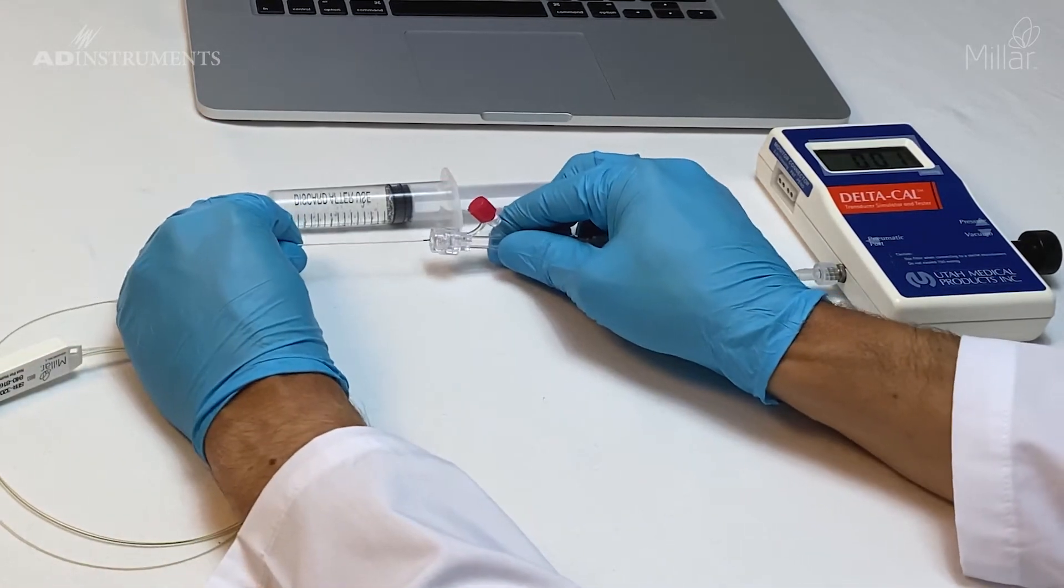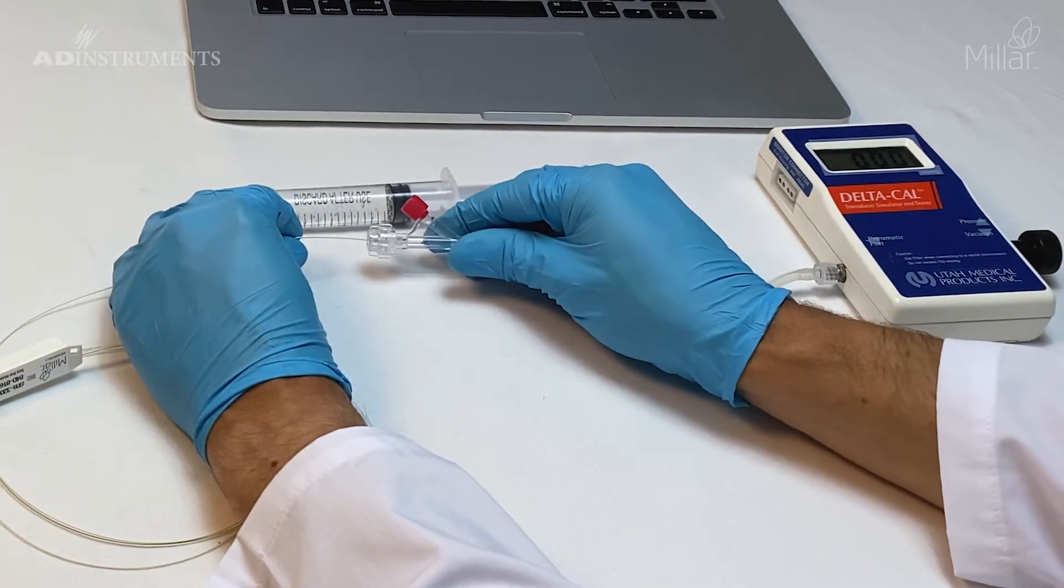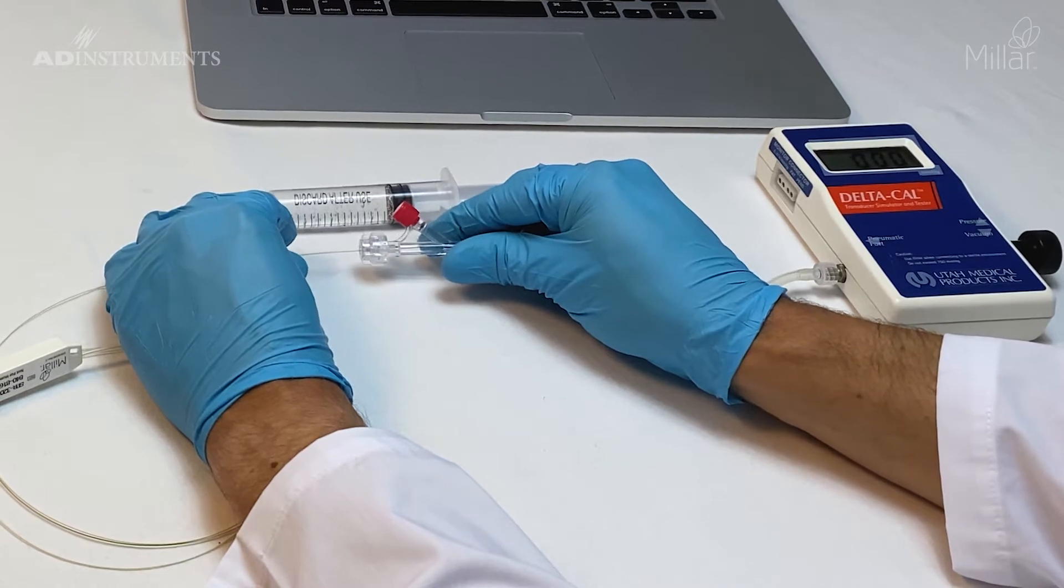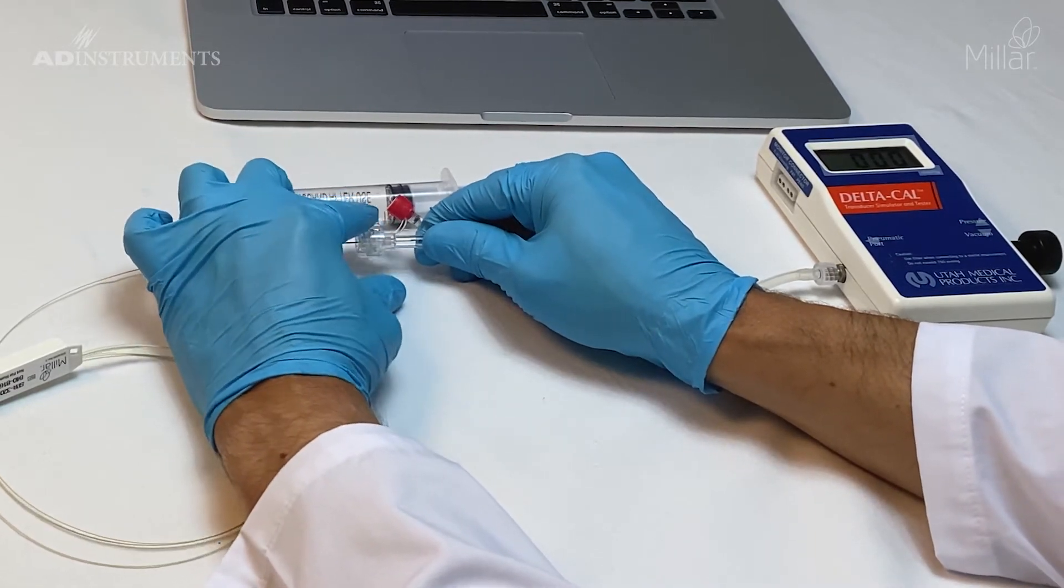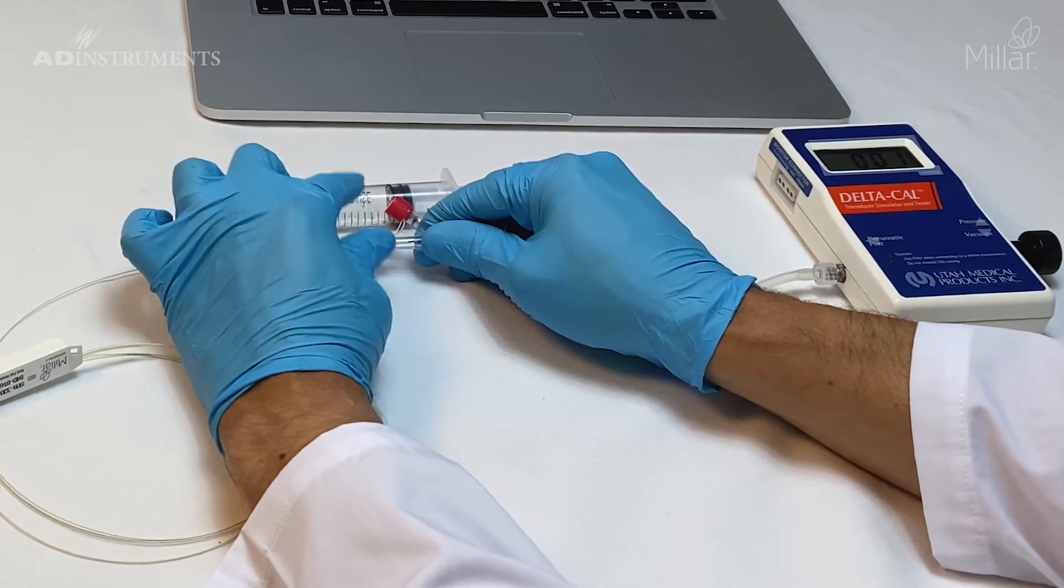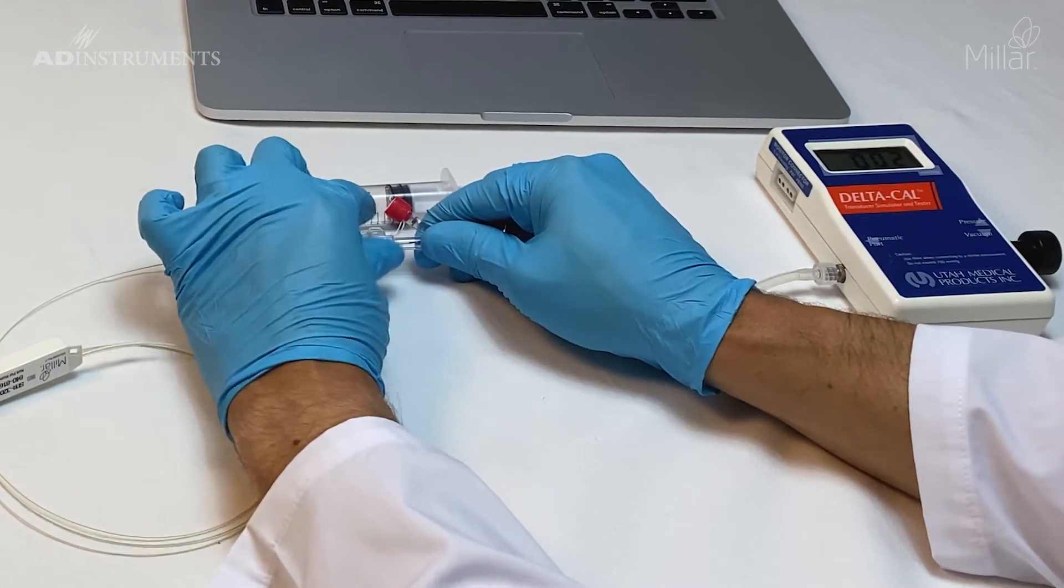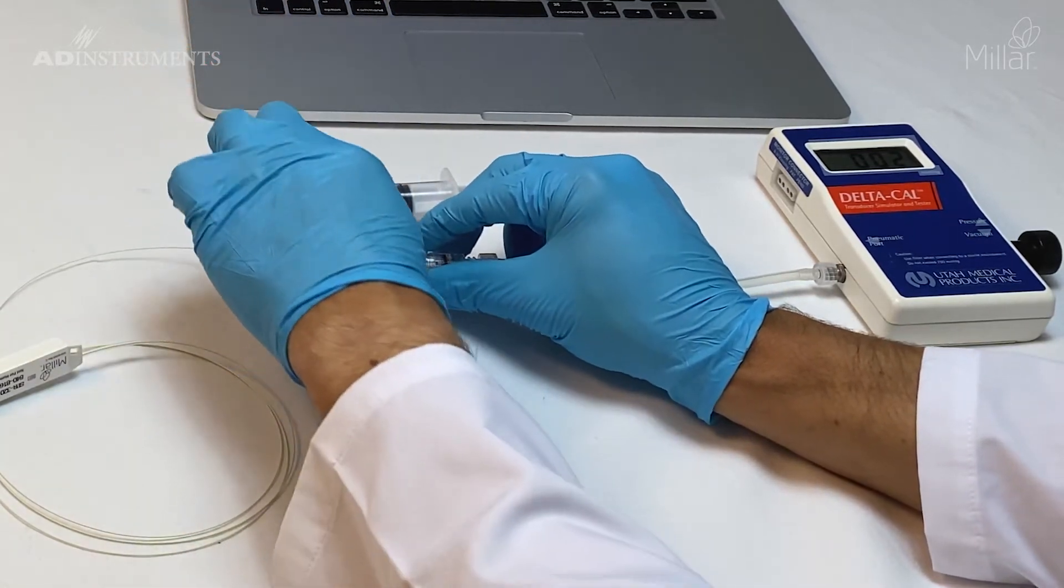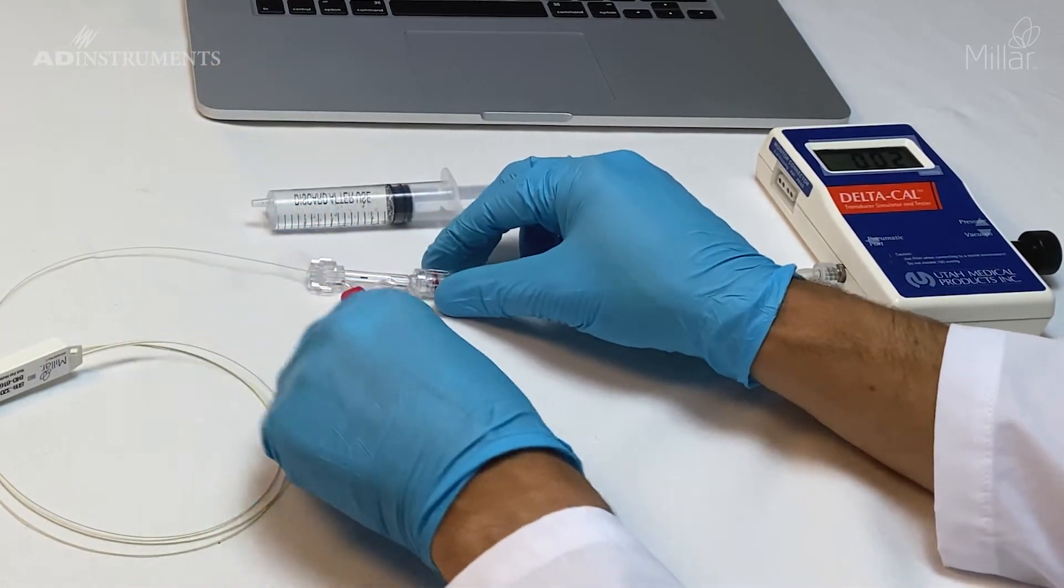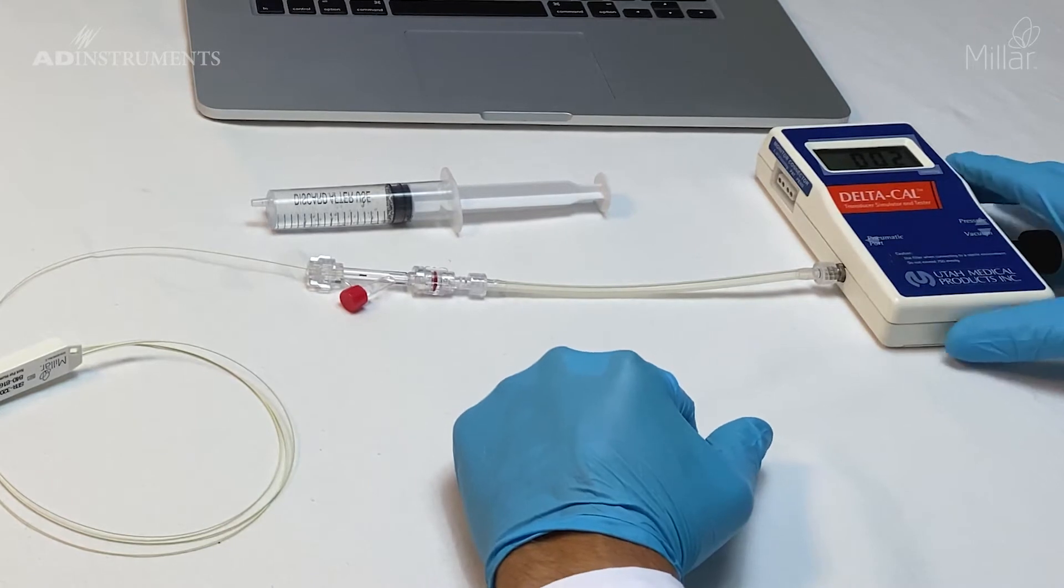I'll take the catheter and insert it inside the valve so it's in the fluid, then close the valve just enough to seal around the catheter. Now the catheter is inside the hemostatic valve.